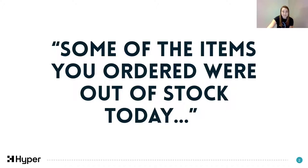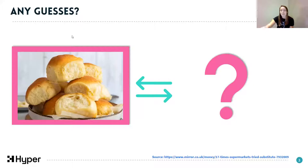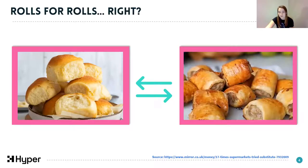I've got some examples of this that I'm going to dive straight into to warm you all up. A bit of a disclaimer - they're all true, so I've not made any of these up. So I'm going to set the scene: imagine you've got your online shop scheduled for 11am tomorrow. You've planned your lovely cheese roll for lunch. But unfortunately, when the online shop arrives, your bread rolls have been substituted for sausage rolls.